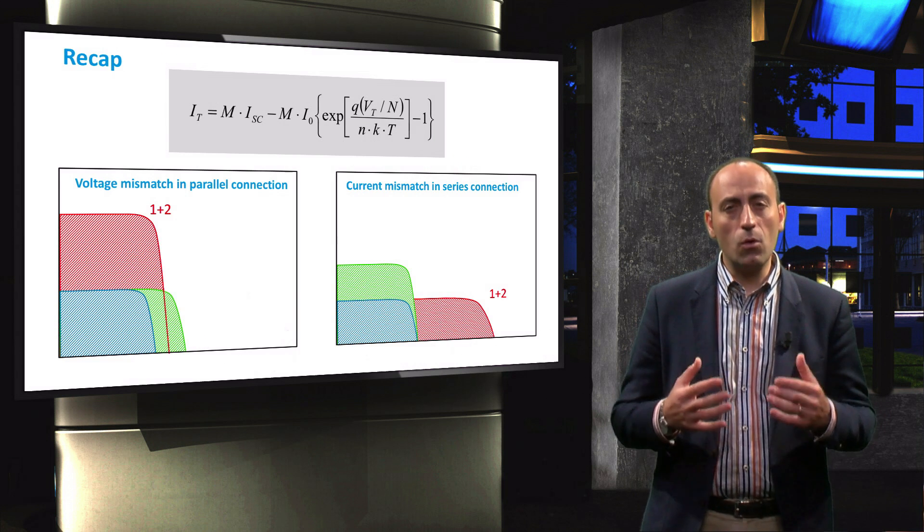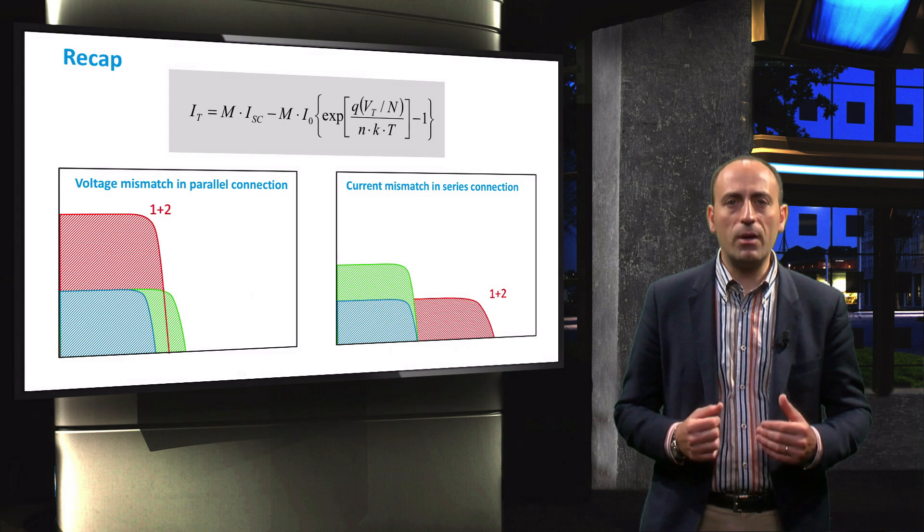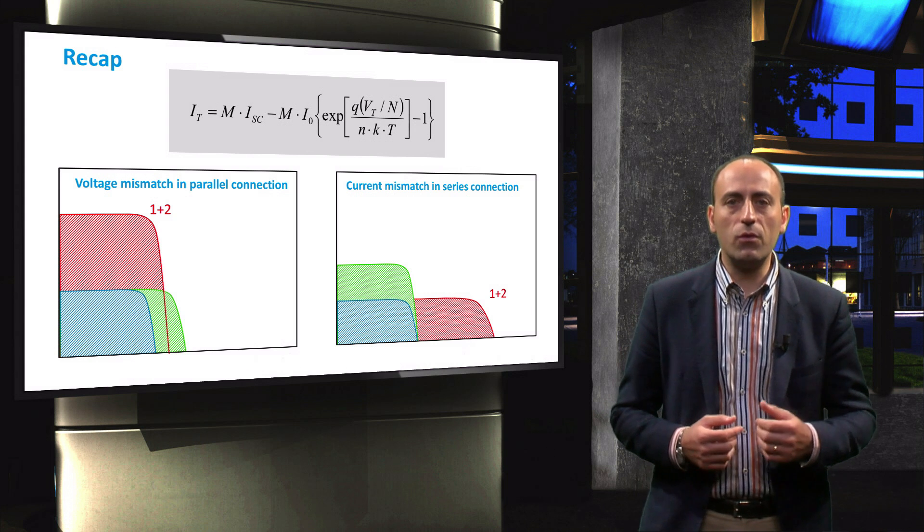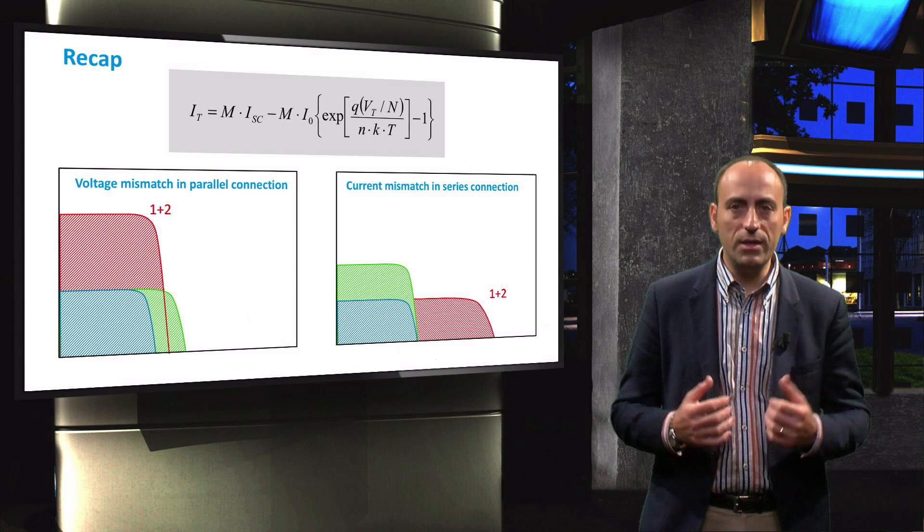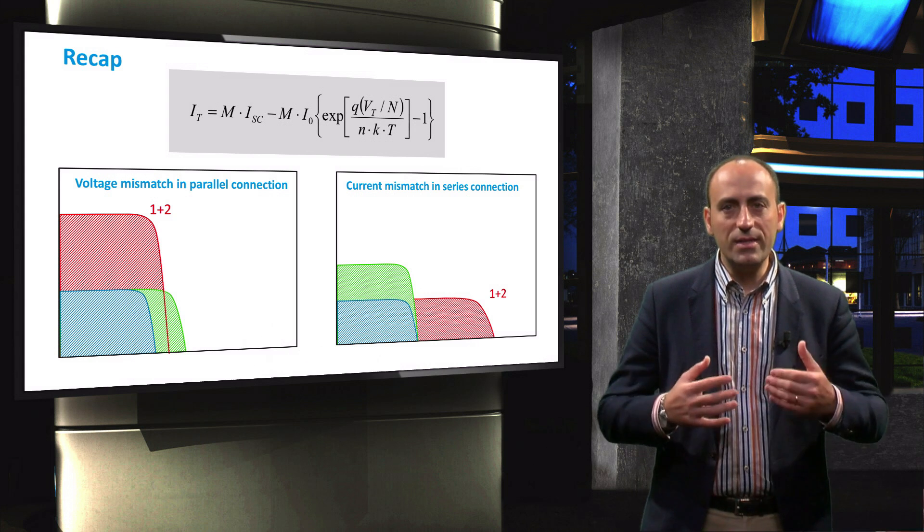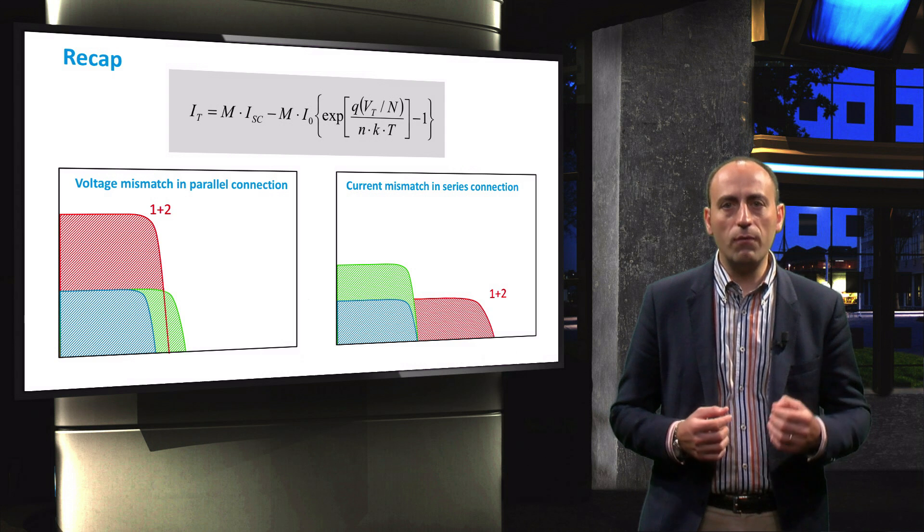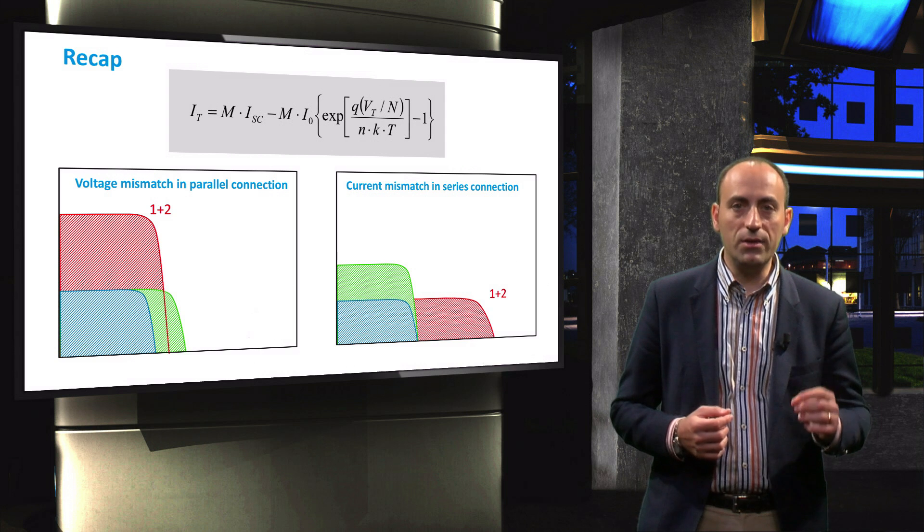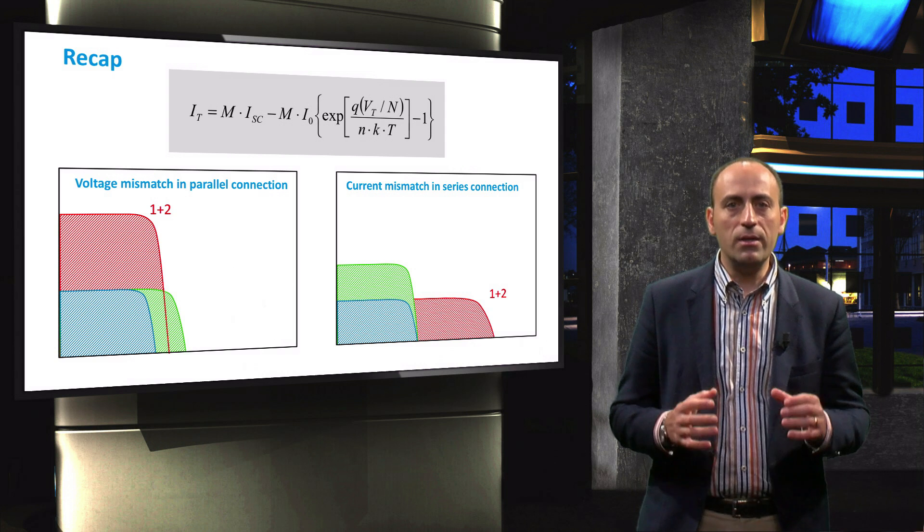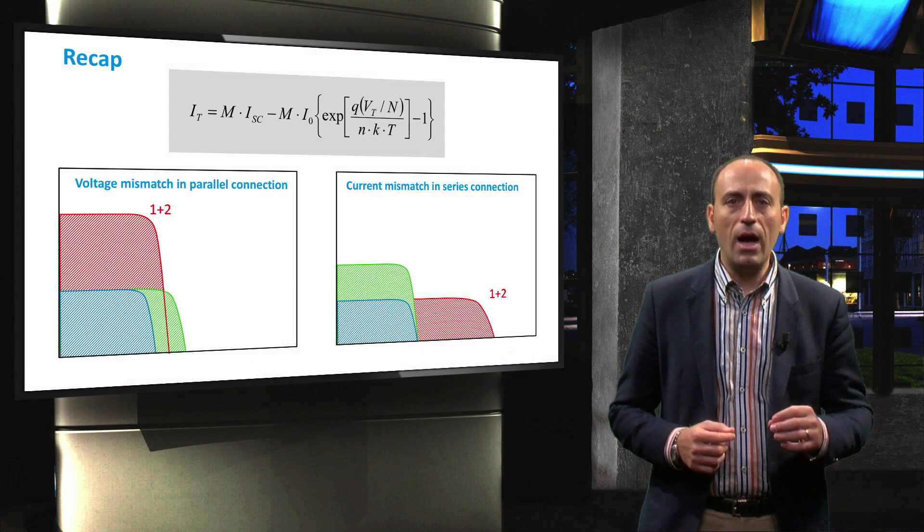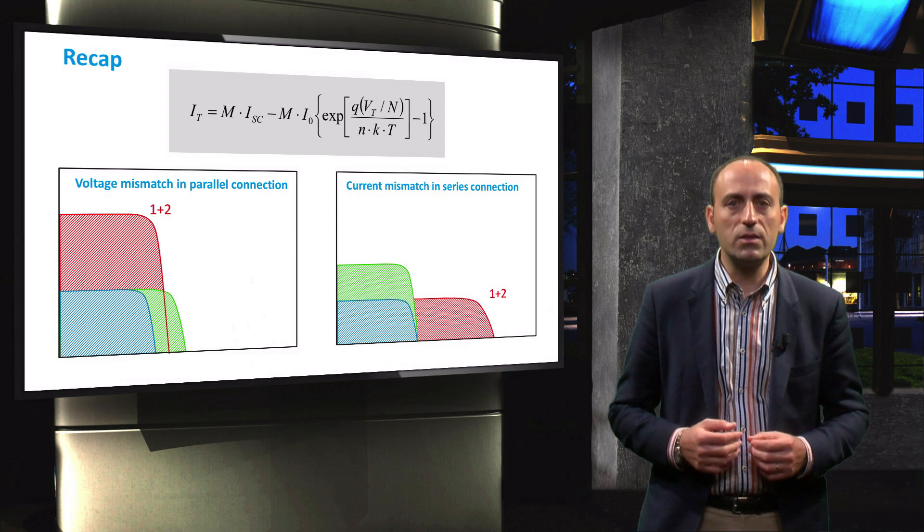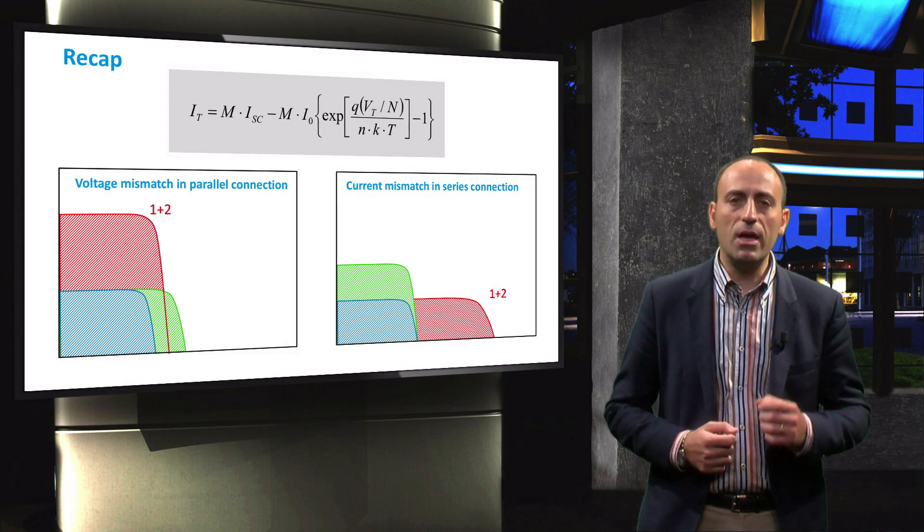So, to conclude this video, we have discussed the external parameters of a single solar cell and introduced the equation for the IV characteristic of an ideal module. We then investigated the IV behavior of two ideal and two mismatched series or parallel interconnected solar cells. In the next video, we will learn how to prevent the power loss in interconnected mismatched solar cells through the use of bypass and blocking diodes.